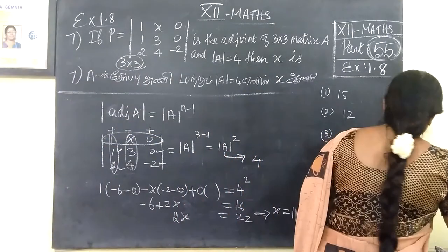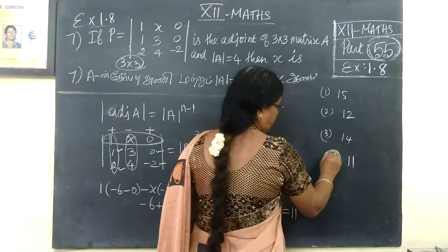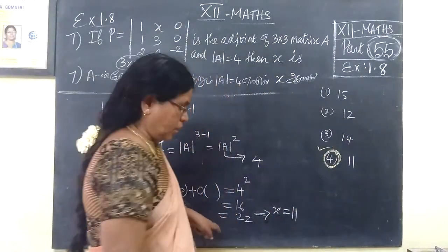You have to calculate x equal to 11. So you have to find the option. Option 4, 11 is the answer.